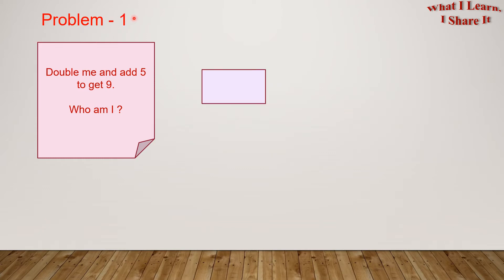Here is problem 1. Double me and add 5 to get 9. Who am I? Here, me refers to a number. We have to find a number which when doubled and added with 5 becomes 9. Let this box represent the number we are trying to find. Then we double it and add 5 and this gives us a total of 9. If we remove 5, then this will become 9 minus 5 equals 4.